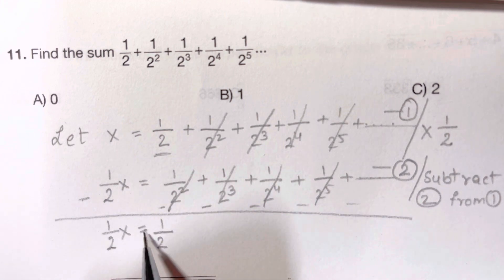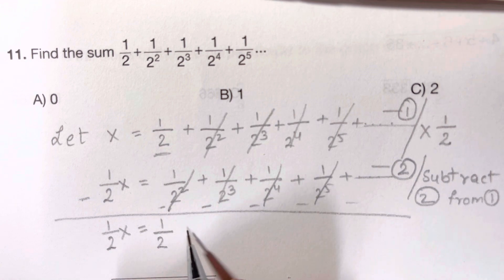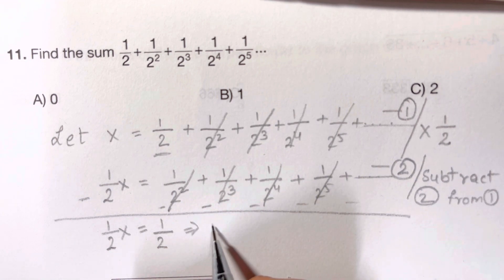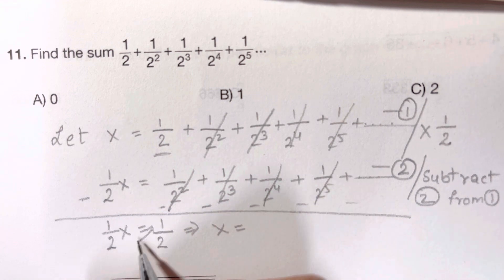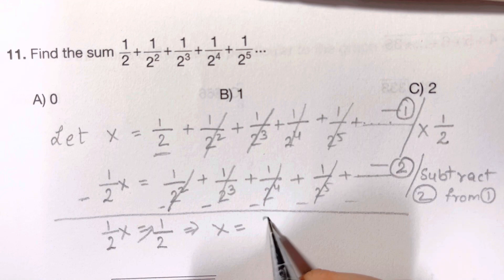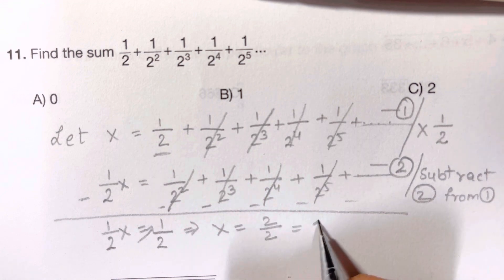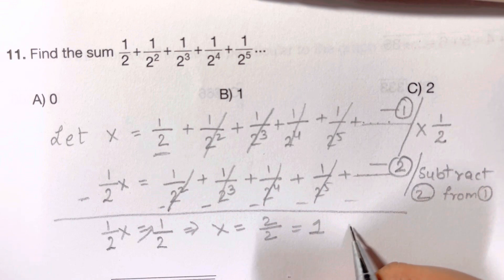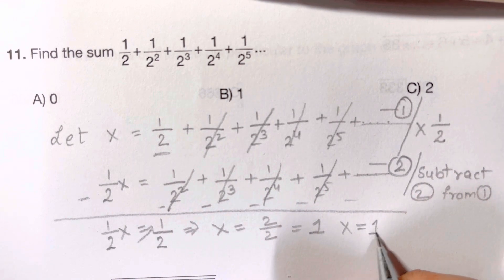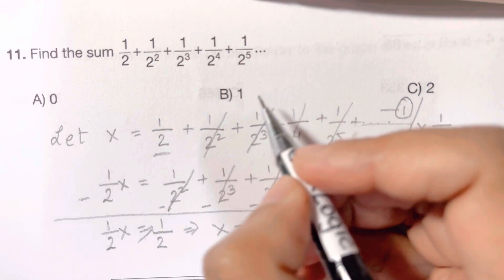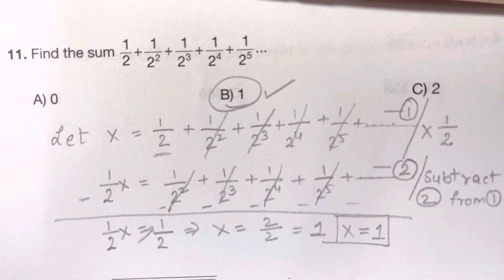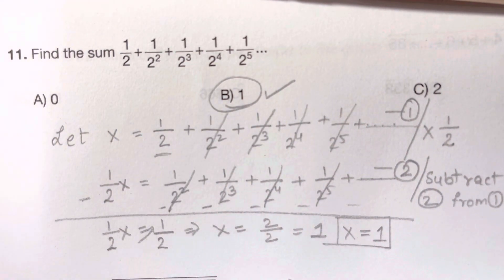Now it's easy to solve for x. You have half x equals one half — cross multiply and you get x equals one. So your answer is x equals one, which is answer choice B.